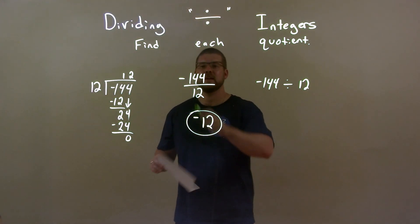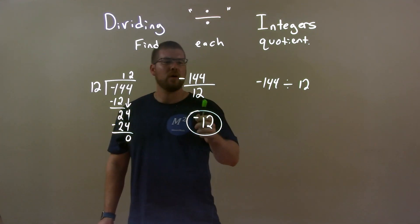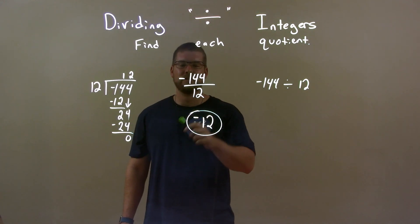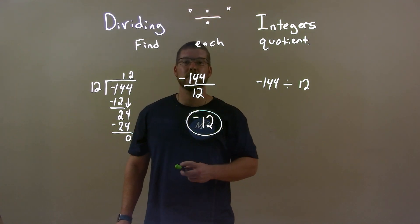Let's quick recap. We're given negative 144 divided by 12. Well 12 goes into 144 twelve times. And a negative divided by a positive is a negative. So our final answer is a negative 12.